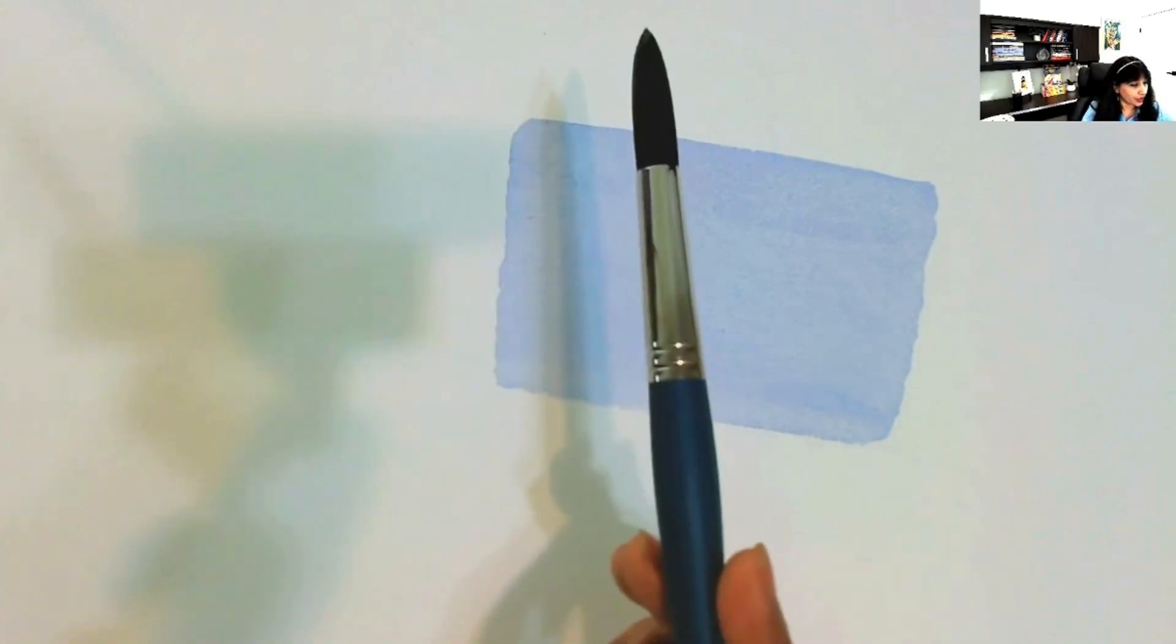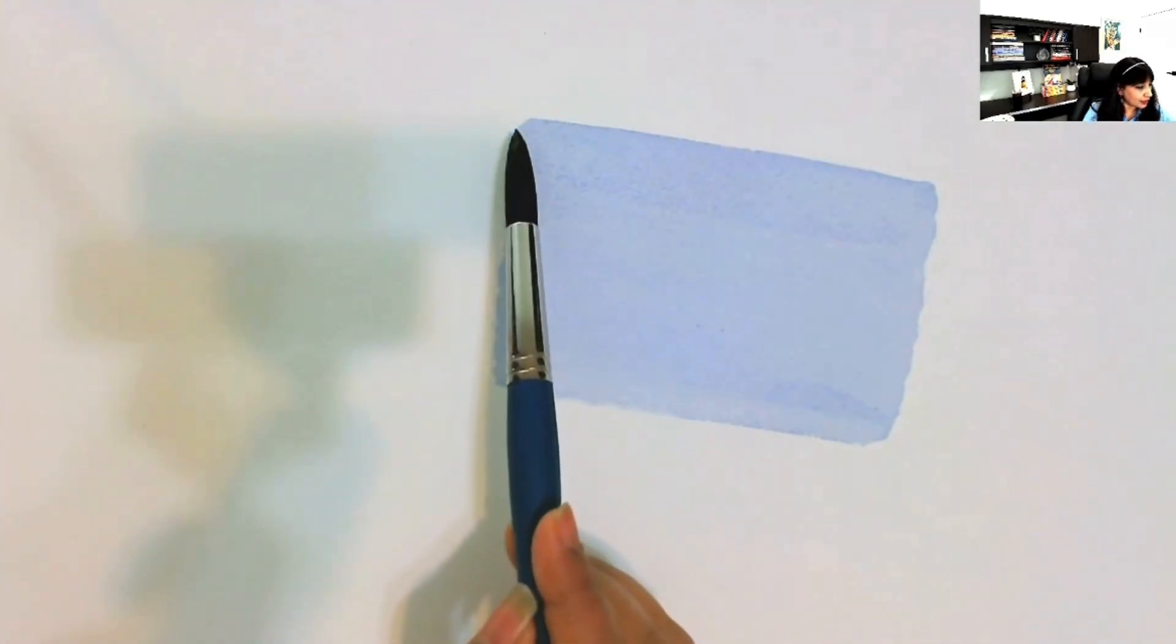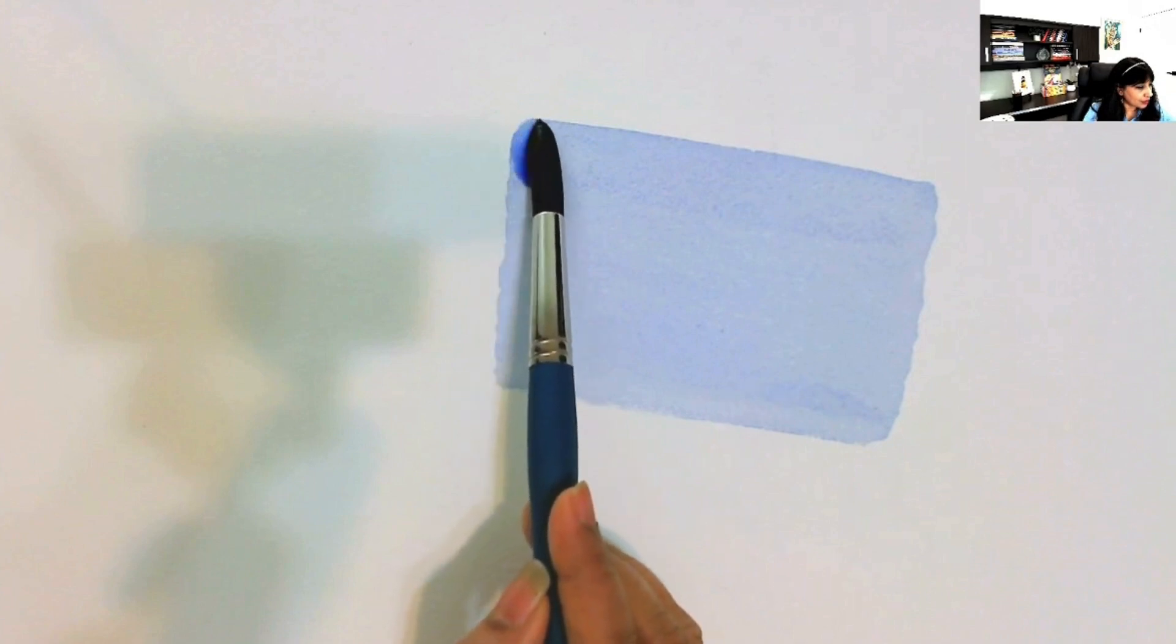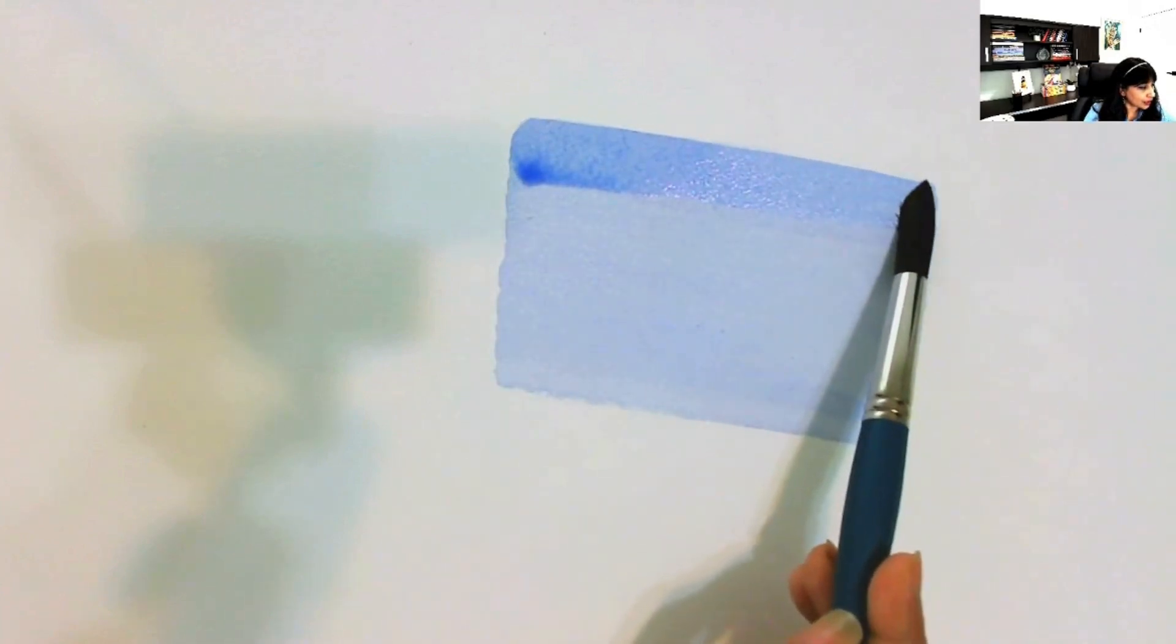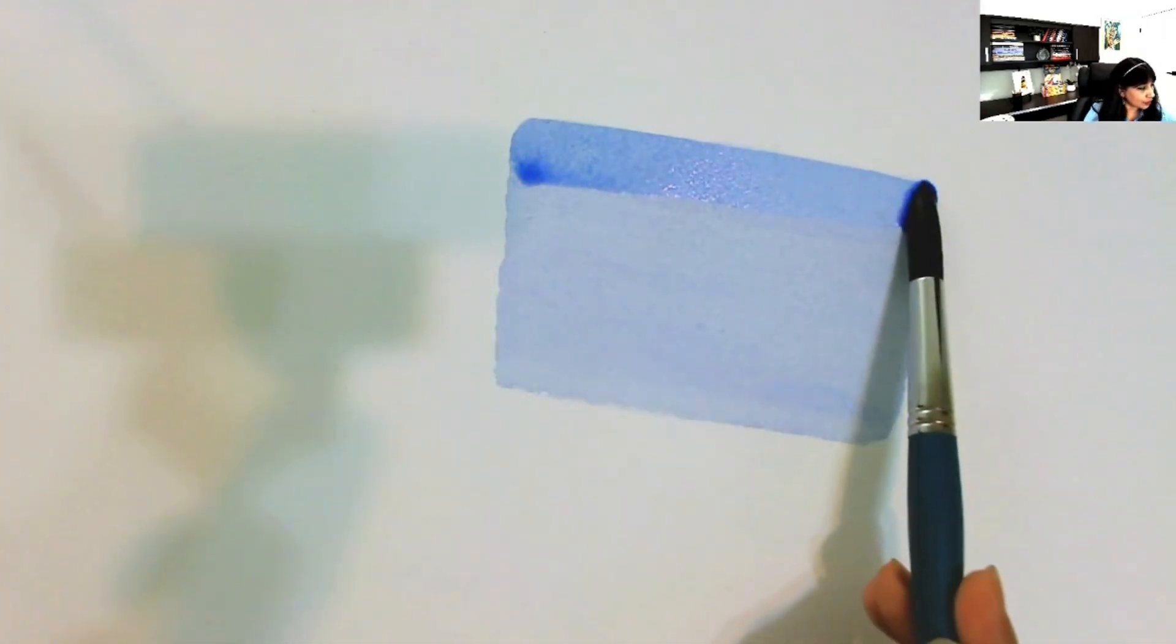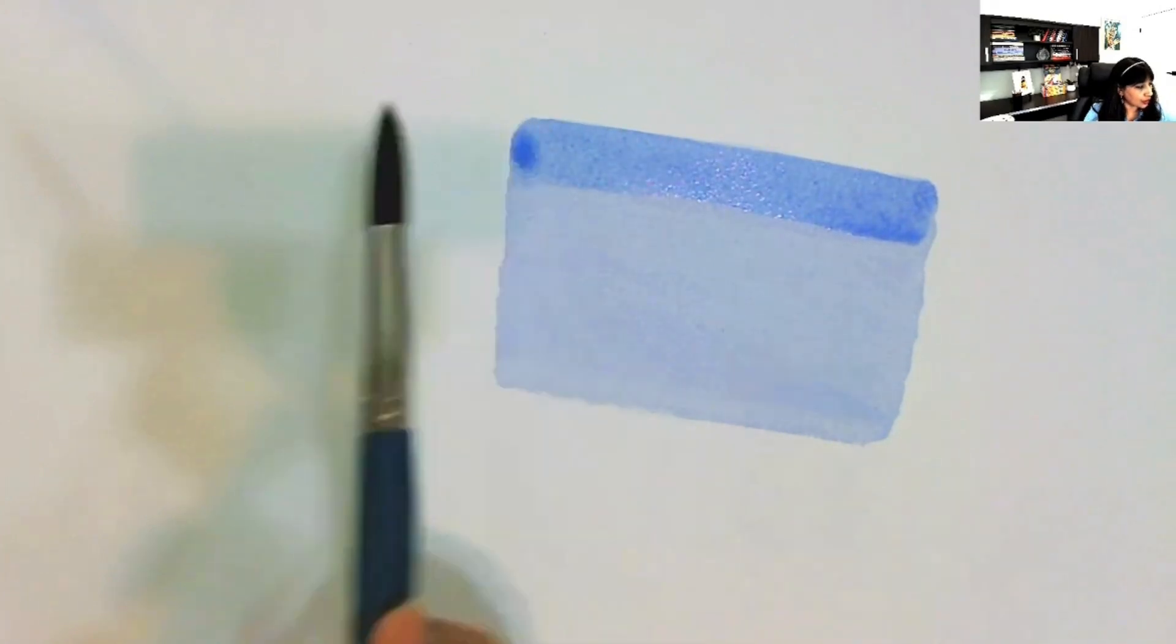So I'm dipping my brush and the paper is also at an angle of 30, and I'm taking the brush right from the top and going from one end to the second end without lifting, and then again dipping the brush in the paint and going from the second end to the first end without lifting.